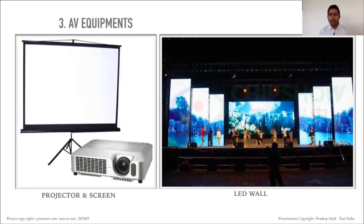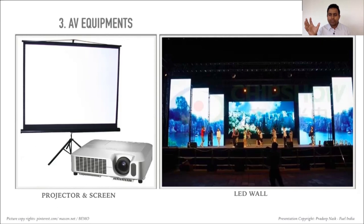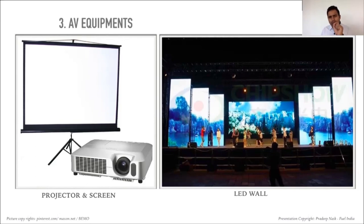The LED wall is now the dominant AV solution. The key metric is pixel pitch — the gap between each LED element. It has reduced from P6 down to P3, P2, and today P1. At P6, you can watch content from far away but smaller text may have distortion. With P1 — the latest on the market — you can stand as close as 10–15 feet and still read text clearly. More clarity, less pixel gap.